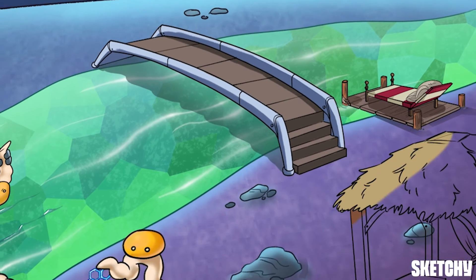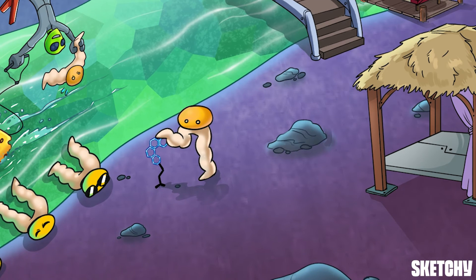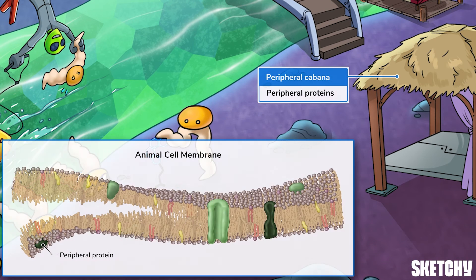Finally, this sad, empty space cabana on the periphery of the fun represents peripheral proteins, also known as membrane-associated proteins. These are not fully integrated into the inner cell membrane, but also are not free-floating in the cytoplasm. Instead, they are bound to the surface of the phospholipid bilayer, or to transmembrane proteins.